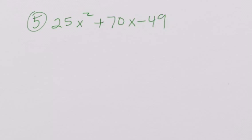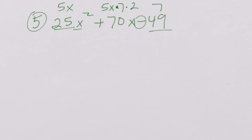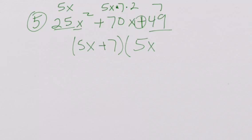Our last problem is an example of a perfect square trinomial. 25 is a perfect square, x squared is a perfect square, and 49 is a perfect square. The square root of 25x squared is 5x, and the square root of 49 is 7. Taking 5x times 7 gives 35, and doubling it gives 70. So that confirms it's a perfect square trinomial. We have subtraction, so this needs to be a plus to make it a perfect square trinomial. So we factor it as 5x plus 7 times 5x plus 7, which is (5x + 7) squared.